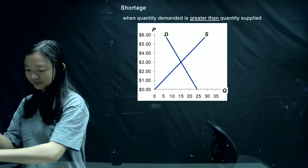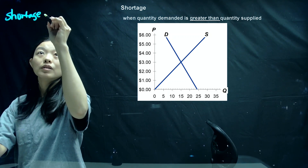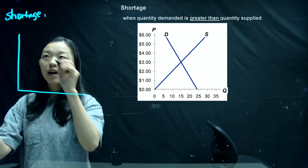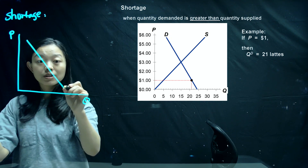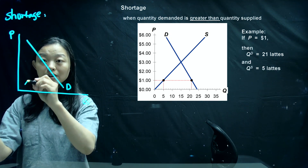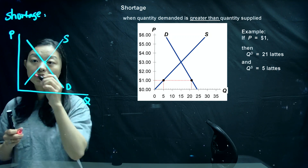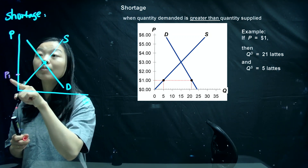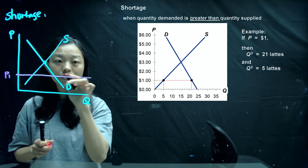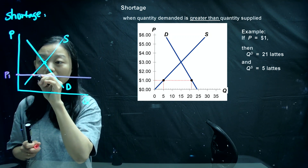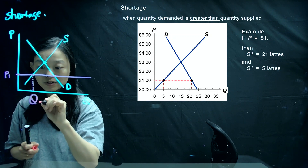Let me draw a graph for shortage. Similar to before: price on the vertical axis, quantity on the horizontal axis. Demand curve is still downward sloping and supply curve is still upward trend. They intersect at the equilibrium point. However, if we assume the market price is at this level, P1, draw a horizontal line across demand and supply. It creates two points: one on the supply curve giving us quantity supplied, and one on the demand curve giving us quantity demanded.